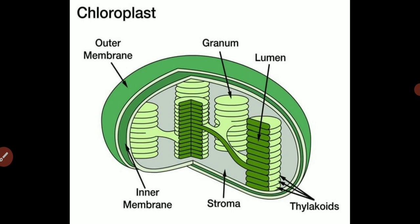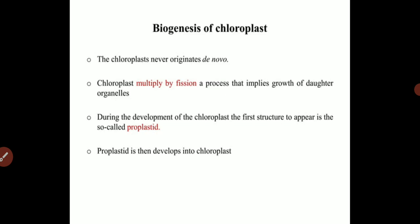Inside the matrix, granum is present. Granum is a stack of coin-like structures called thylakoids arranged in a stacked manner. Lumen refers to the space inside the granum — if you take a cross-section of the granum, the lumen structure is present inside.